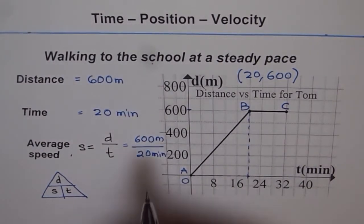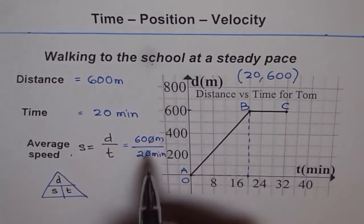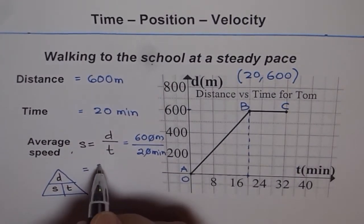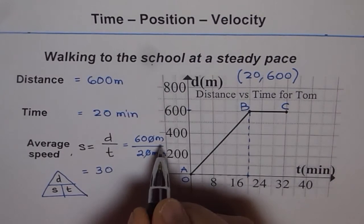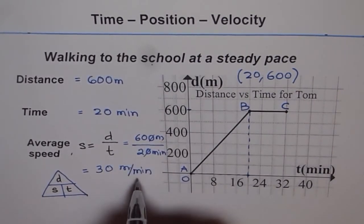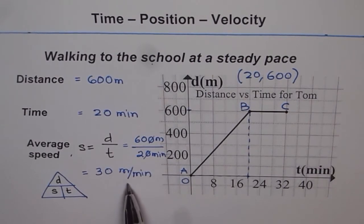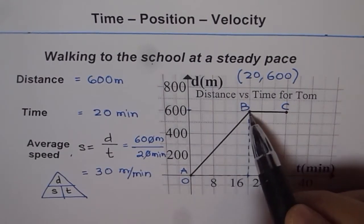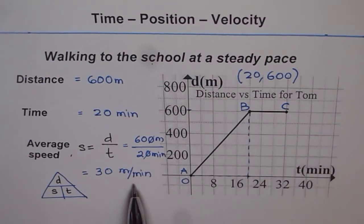So if we divide 600 by 20, what do we get? 60 divided by 2 is 30. So we get 30 meters per minute. So that is the speed, steady speed at which Tom goes from home to school. So that is how we can calculate speed from the given graph.